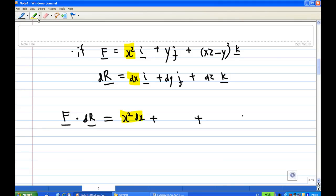And then for the y component, y and dy multiplied together, you are going to get y dy. And finally, xz minus y times k and dz, k dot product will give you xz minus y dz. So this is F dot dr.